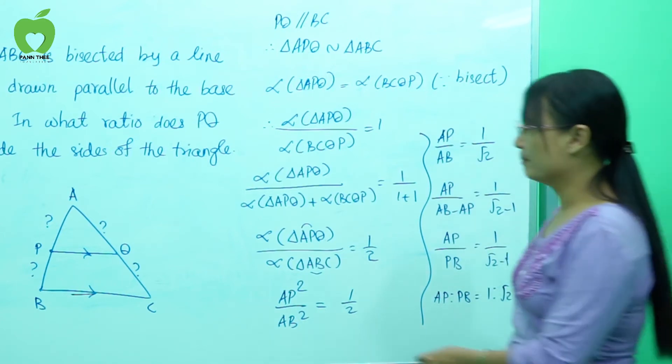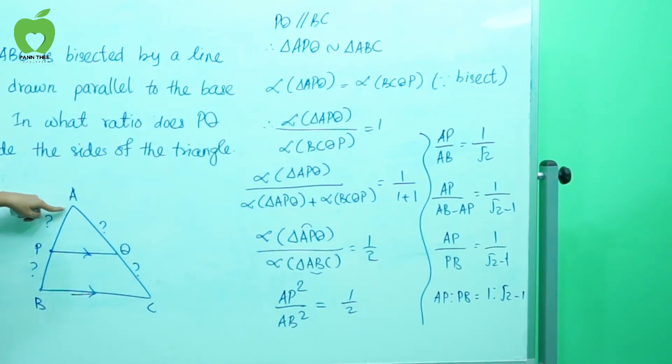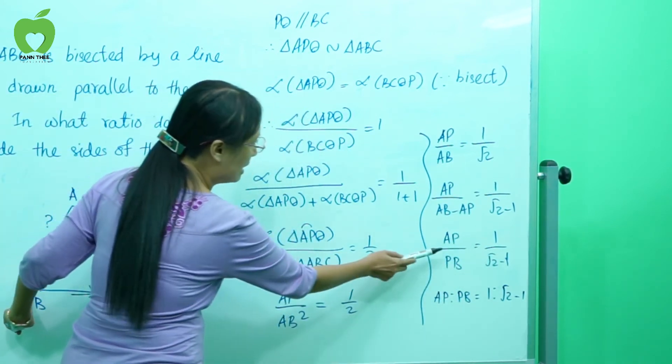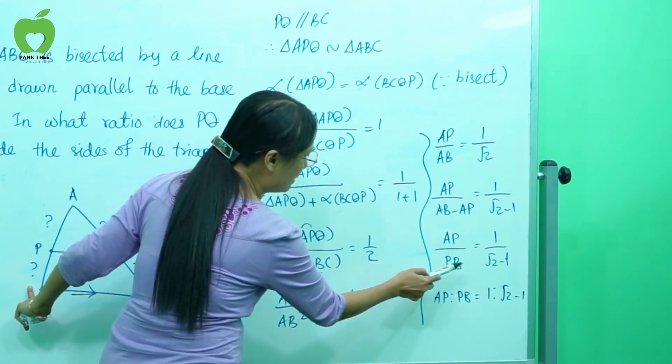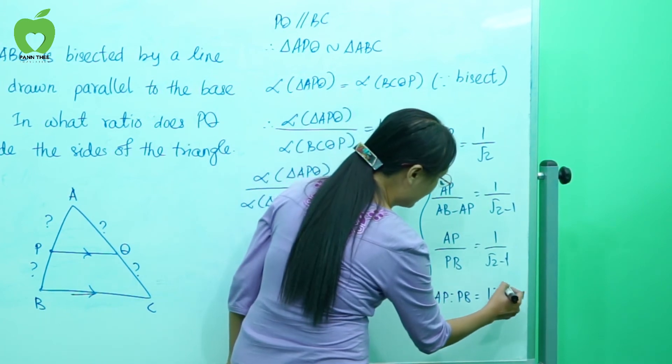What is a, 1 divided by 4, equal to 1 by root 2 minus 1. So you can do this. AP by PB equal to 1 by root 2 minus 1. AP is to PB equal to 1 is to root 2 minus 1.